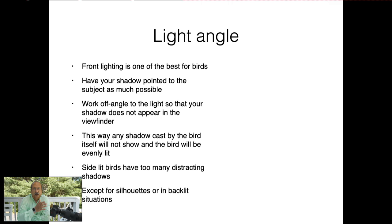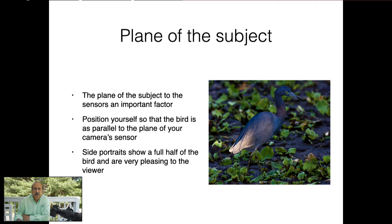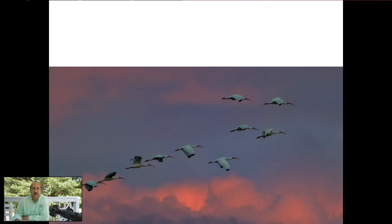Unless you want silhouettes, backlit situations are a whole different angle situation — it really depends on what you're trying to achieve. Shooting at the plane of the subject is key: if you can position yourself so your camera sensor is in the same plane as the subject, you'll have much better depth of field control, better orientation, more detail, and you'll be able to see head to tail in about the same focus. For birds in flight, it's much easier to get them all in focus if they are flying across rather than flying towards you.